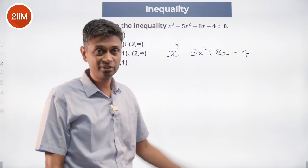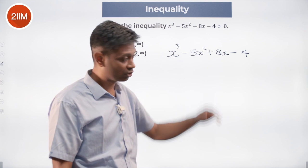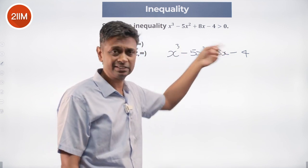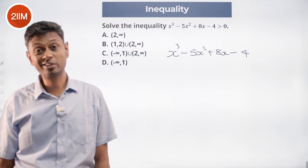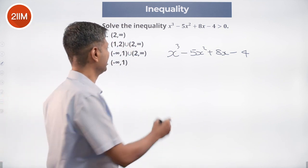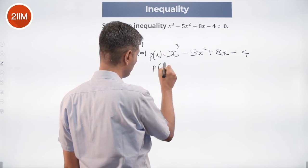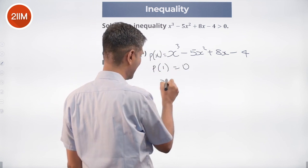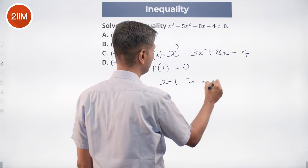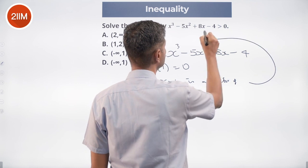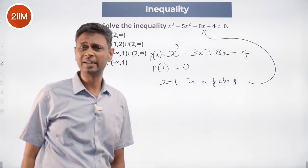Add all the coefficients: 1 - 5 + 8 - 4. 1 + 8 is 9, -5 - 4 is -9. Sum of all coefficients is 0, or if I call this p(x), then p(1) = 0, which means x - 1 is a factor. Brilliant.